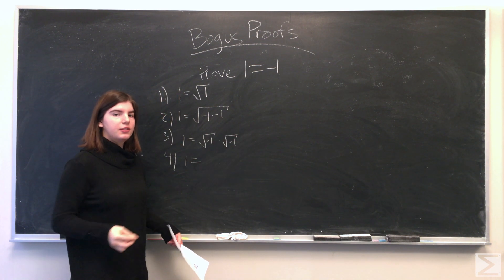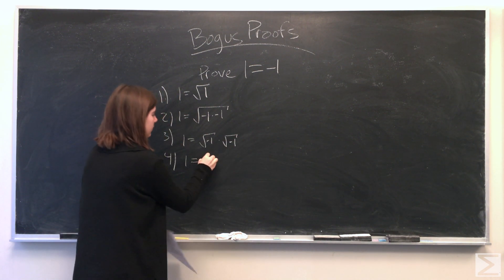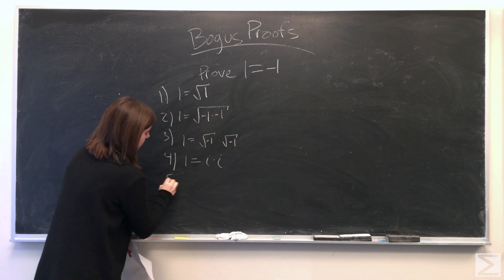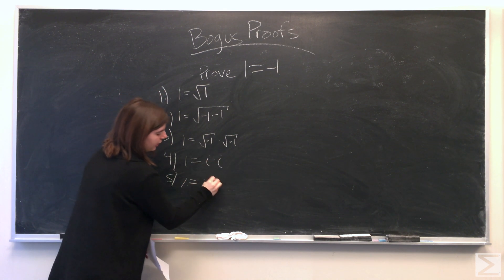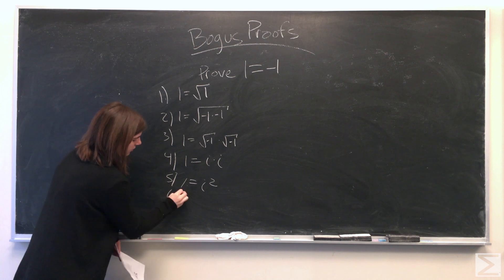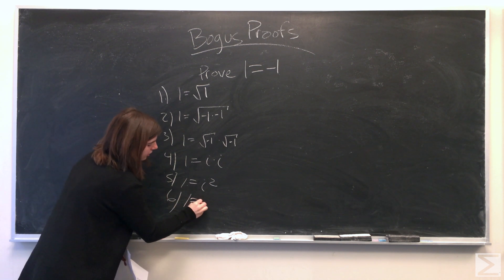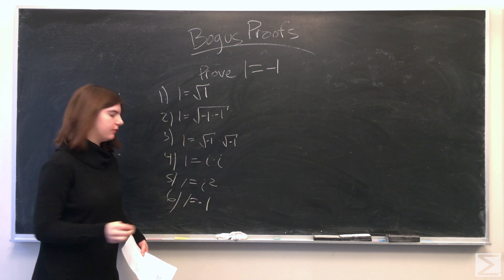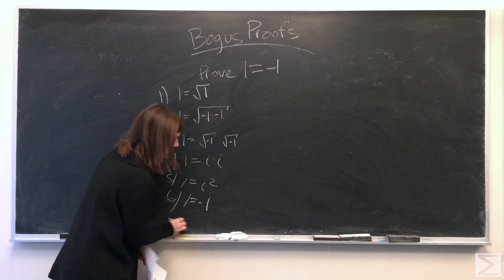The square root of negative 1 is equal to i. So we have 1 is equal to i squared, and i squared is negative 1. So we are left with 1 is equal to negative 1.